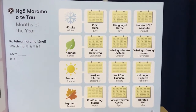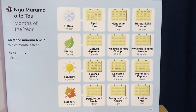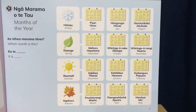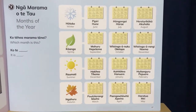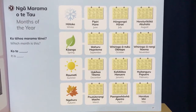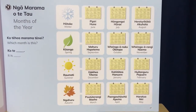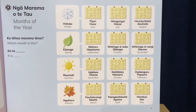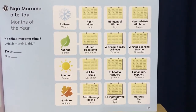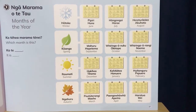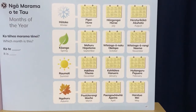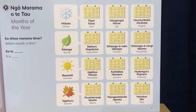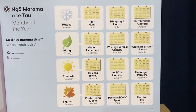Kia ora, ko Sharon Holt tōku ingoa. Today we're going to look at the seasons and the months of the year. This is a page from our Te Reo sing-along book, which is a picture dictionary — not exactly a sing-along book, but it's got words, sentences, and an app. This is the page about ngā marama o te tau, months of the year. You can see ngā marama o te tau on the left.